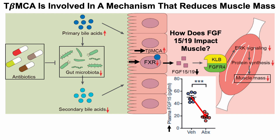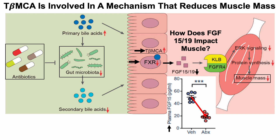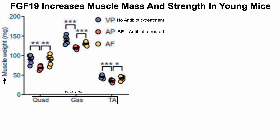So what's the link for FGF-15 or FGF-19 with muscle? FGF-19 increases muscle mass and strength in young mice. Here we're looking at muscle weight again for those three muscles — quadriceps, gastrocnemius, and TA — with three groups: VP (blue circles, no antibiotic treatment), AP (antibiotic treated), and AF (antibiotic-treated plus FGF-19, the human version injected subcutaneously). Muscle mass for each of these muscles was significantly reduced in the antibiotic-treated mice when compared with untreated.